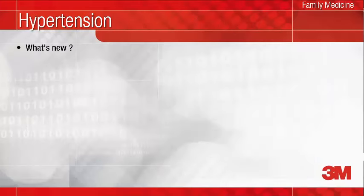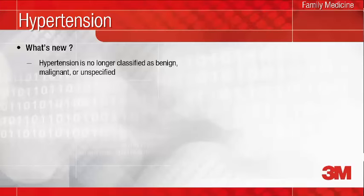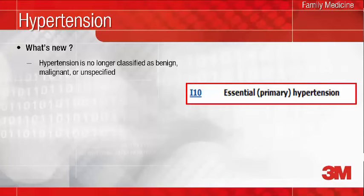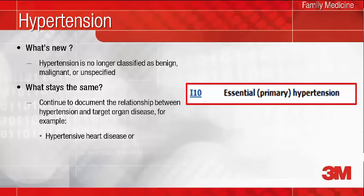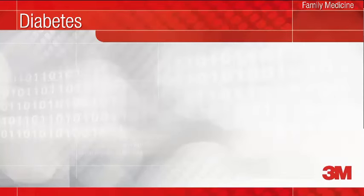What's different about the diagnosis code for hypertension in ICD-10 is that it is no longer classified as benign, malignant, or unspecified. Diagnoses of benign or malignant hypertension or hypertension with no further specificity are all coded the same. The ICD-10 code for hypertension is one you will easily remember — it is I-10, as you can see on the screen. As in ICD-9, continue to document the relationship between hypertension and target organ disease, such as hypertensive heart disease or chronic kidney disease due to hypertension.